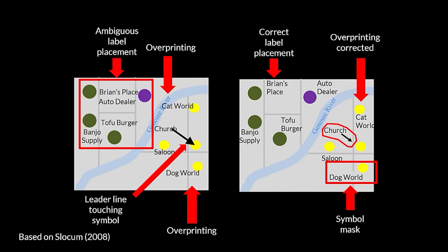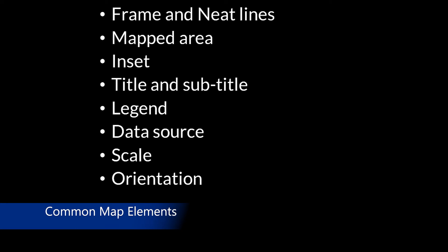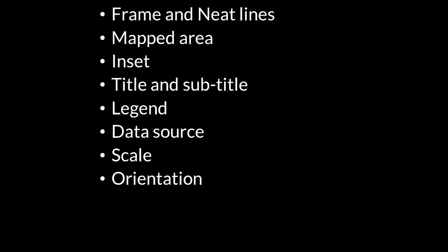Now that you've learned about the design of map symbols, I'll next discuss the design of the overall map itself in terms of common map elements. Maps contain standard elements used to create a final map product. These elements include a frame and neat lines, the mapped area, inset maps, titles and subtitles, a legend, data source attributes, scale bars, and orientation. Next, I'll walk you through what these elements look like by inspecting an actual map.